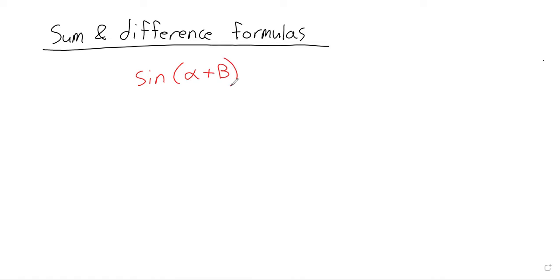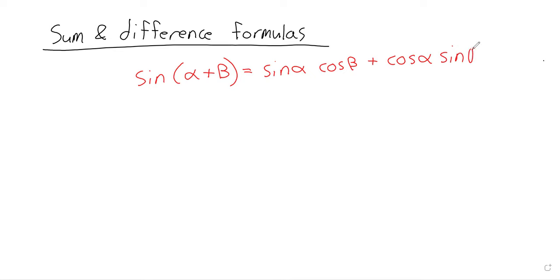The sine of (alpha + beta) equals — and whatever you were hoping this would be, it probably isn't. The sine of (alpha + beta) is not the sine of alpha plus the sine of beta. It's the sine of alpha times the cosine of beta, plus the cosine of alpha times the sine of beta.